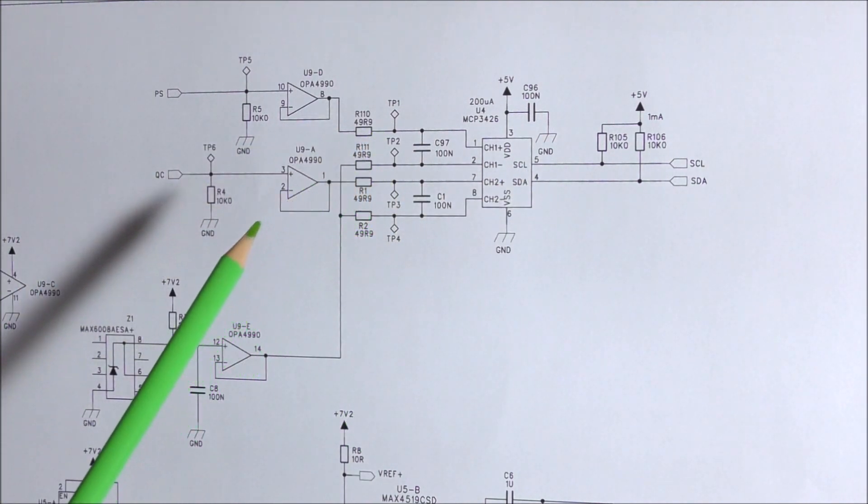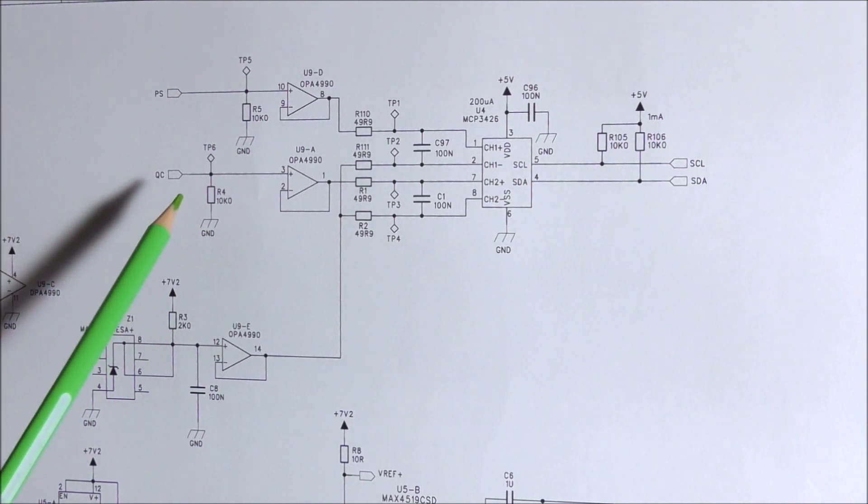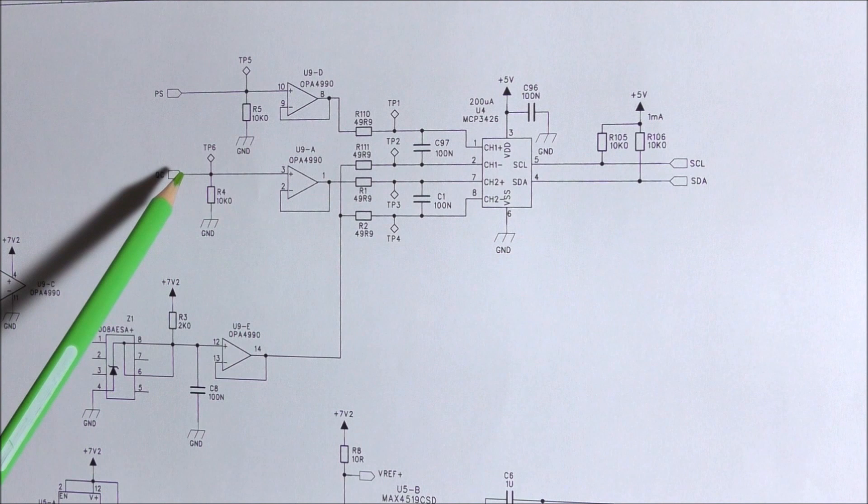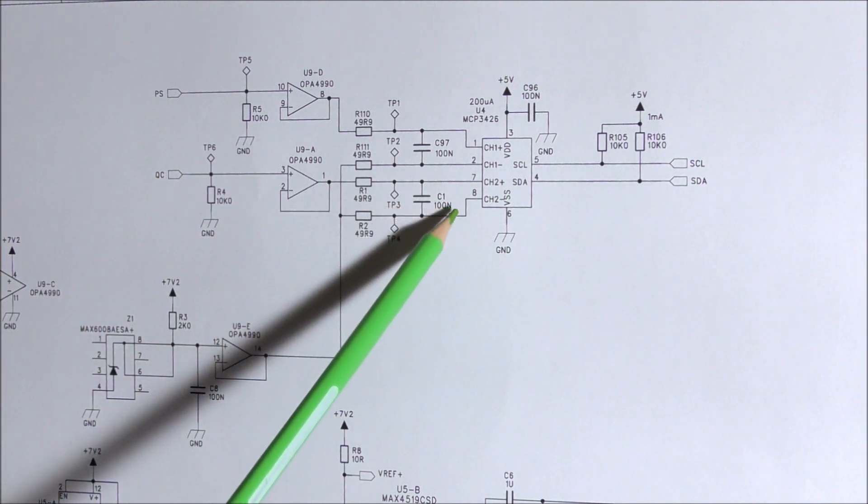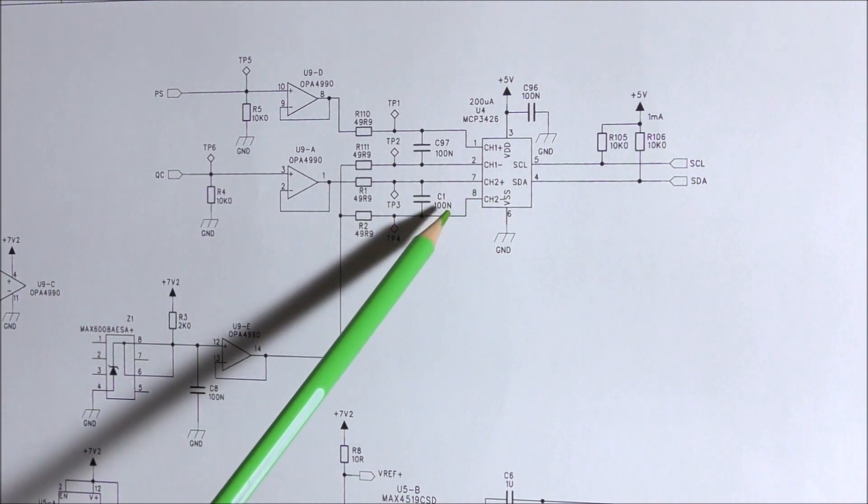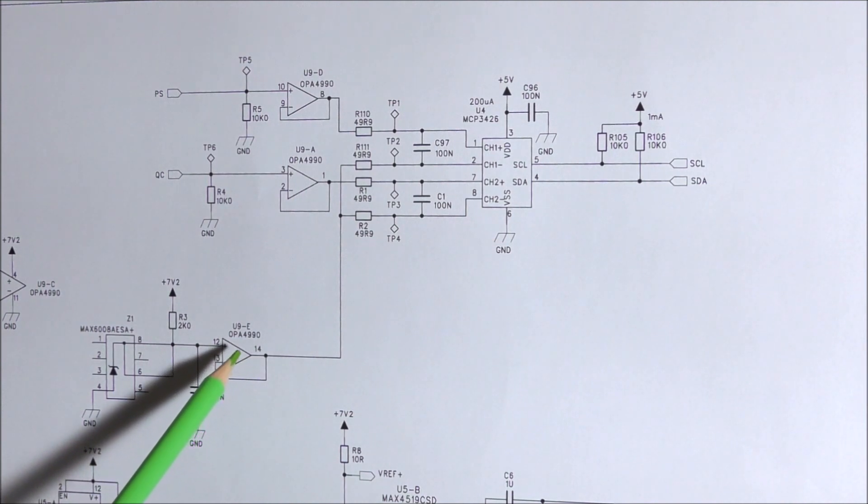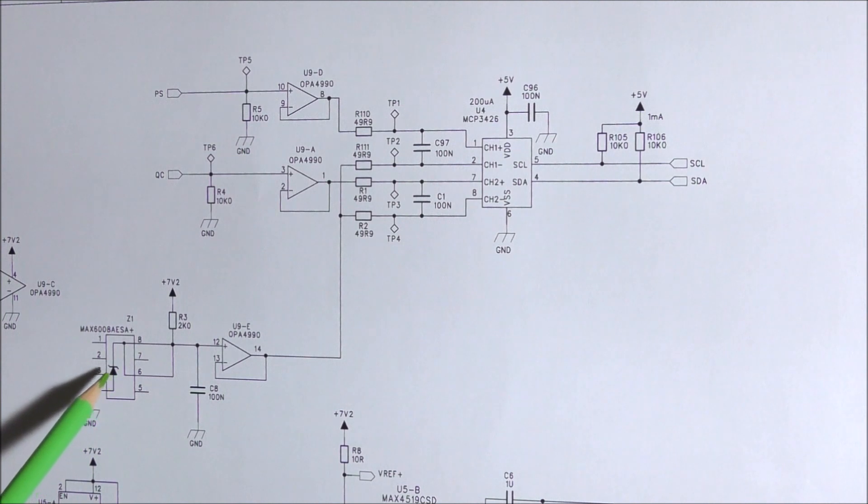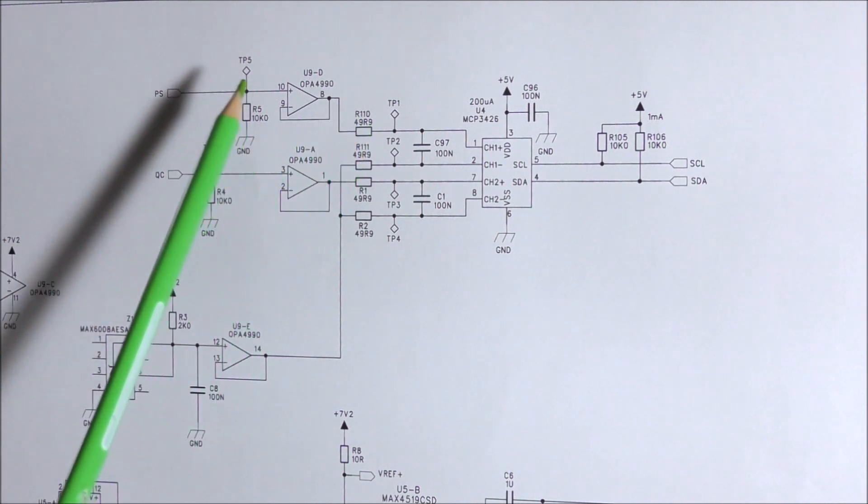I made some measurements on the sensors. For the pitot sensor, actually the voltage of the output is approximately 2.5 volts. So this voltage corresponds to zero differential pressure. This is why the second input here of the ADC is connected to a 2.5 volts reference voltage made with this voltage reference here, MAX6008. It is the same for the second input for the static pressure.